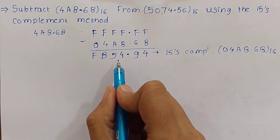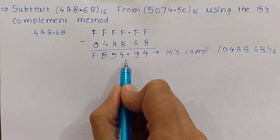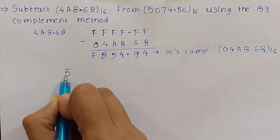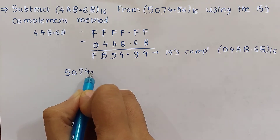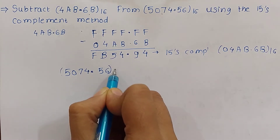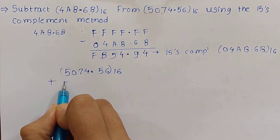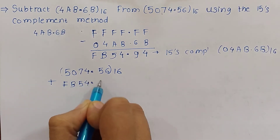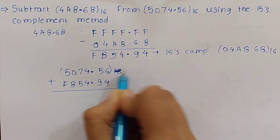Now we will perform the subtraction using this 15's complement number. We take the number from which we are subtracting and add it to the 15's complement. So we add 5074.56 to the 15's complement number. We just need to add these two numbers.